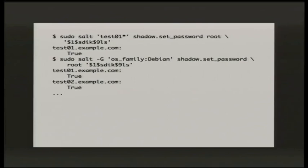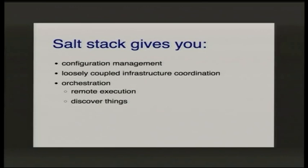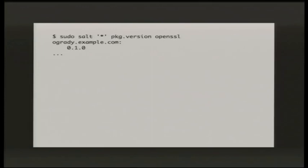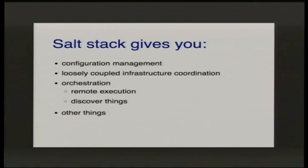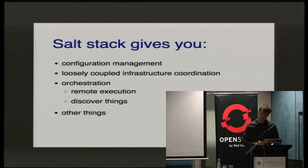With great power comes great responsibility — and that hash does not bear any resemblance to the right hash. With grains, you don't just have to use the OS family; there's a variety of grains like CPU information, network information, and memory sizes, and you can write your own grains. You can discover or relearn things with Salt — for example, what versions of OpenSSL are running on your minions. In this mocked-up example, it's very old and needs to be updated.